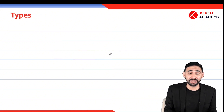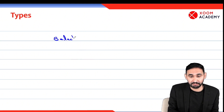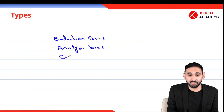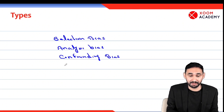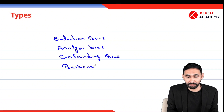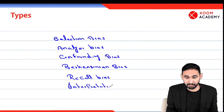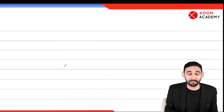There are many types of bias. Selection bias — as the name indicates, it arises during selection of subjects. Then analysis bias, which can arise during analysis. And confounding bias. Then there is Berkinsonian bias, which was named after Dr. Joseph Berkson. And there is recall bias, interpretation bias, and while selection bias.